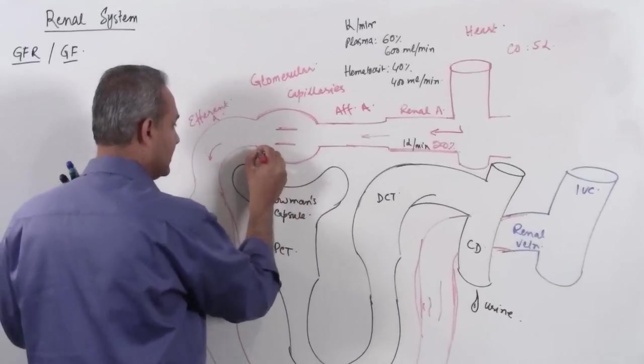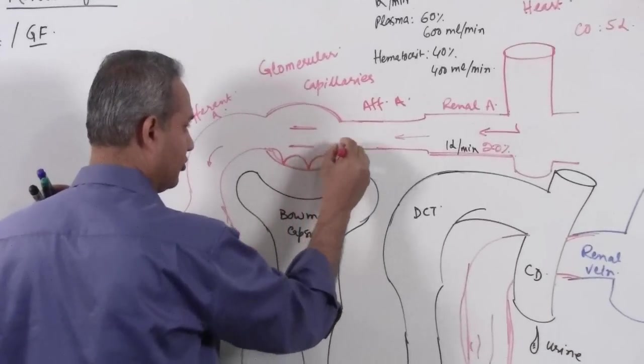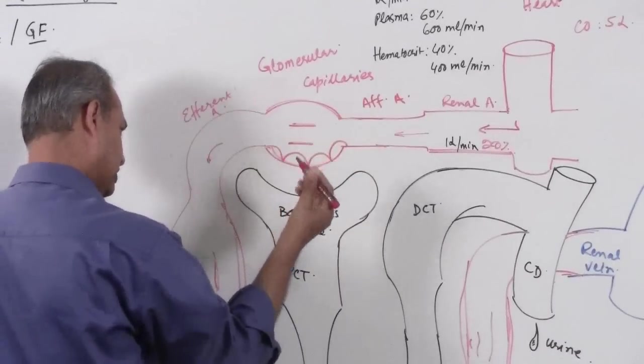Here a summary that we have endothelial cells. Of course, these are capillaries, so these would have endothelial cells.